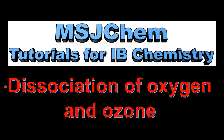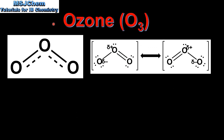This is MSJChem and in this video we're going to look at the dissociation of oxygen and ozone. Let's start by looking at each molecule in turn, starting with ozone which has the formula O3.